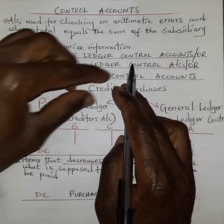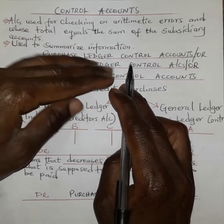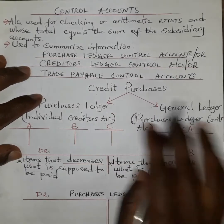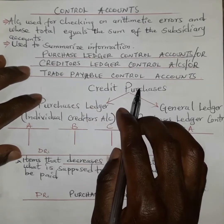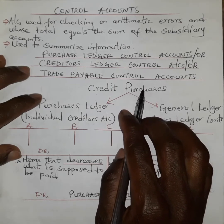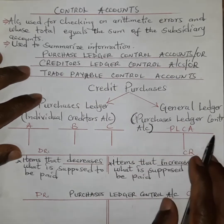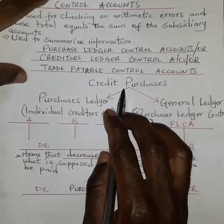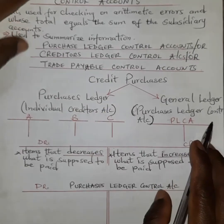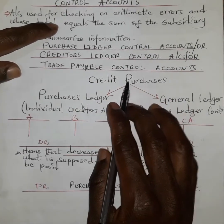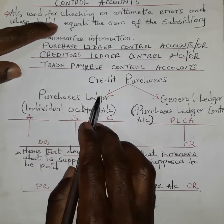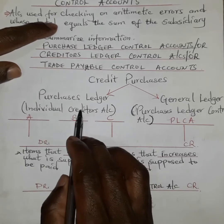When we talk about purchases ledger control accounts, also simply called creditors ledger control accounts, we know that a business will normally make credit purchases from suppliers, vendors, or creditors. A credit purchase means that the business does not pay on the spot — in other words, it is a deferred payment. They pay later, and these transactions are recorded in what is known as the purchases ledger.